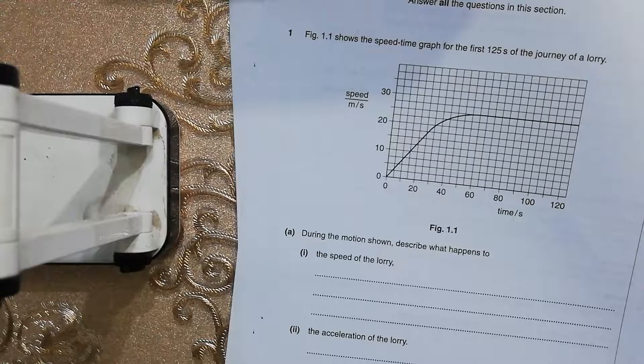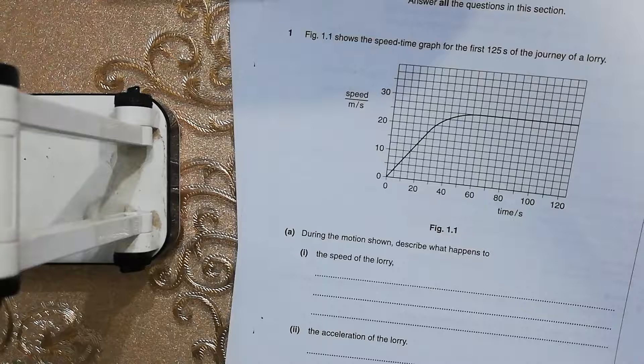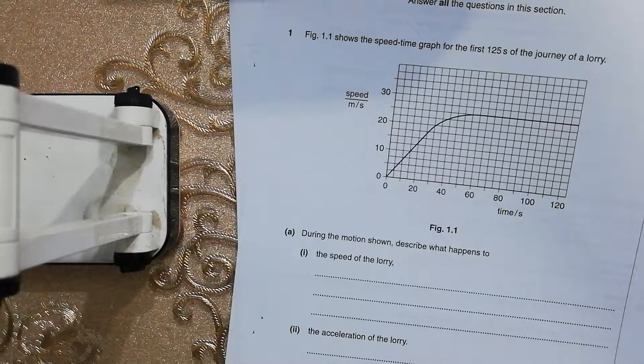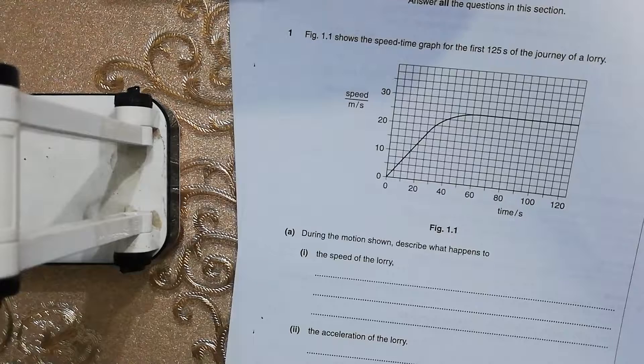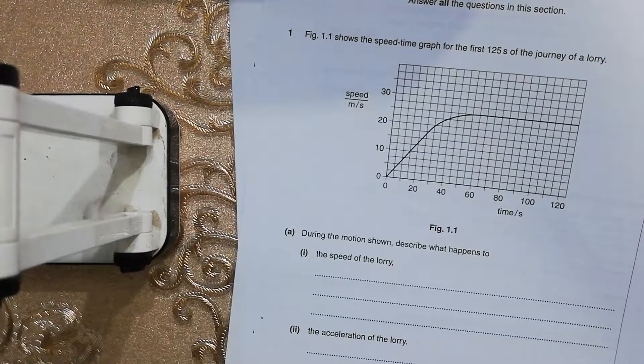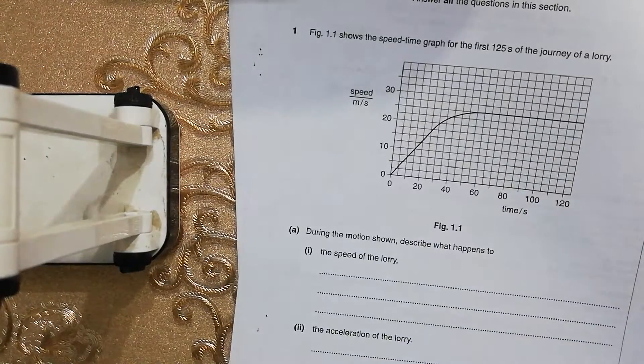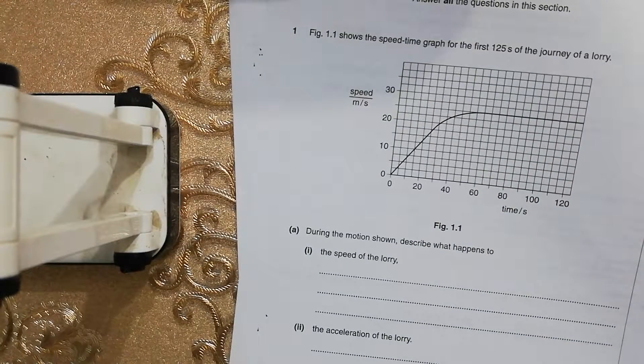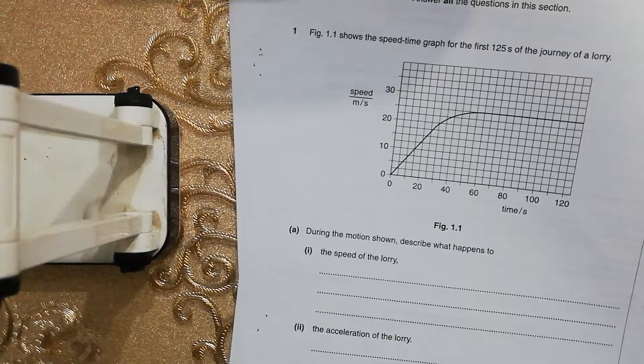Okay, so here we have the question. Figure 1.1 shows the speed time graph for the first 125 seconds of the journey of a lorry. During the motion shown, describe what happens to the speed of the lorry. As you can see this is a speed time graph and on the x-axis the time is represented, on the y-axis the speed is represented.